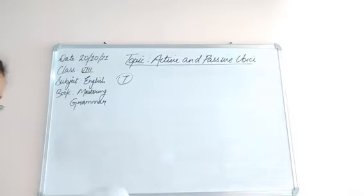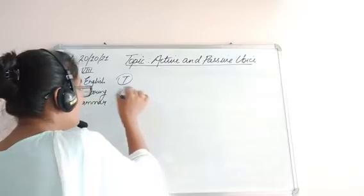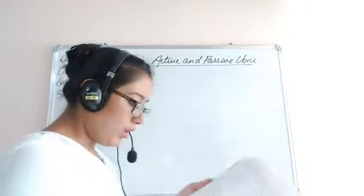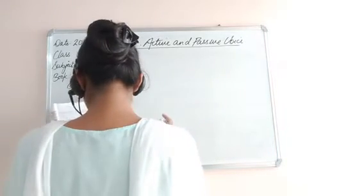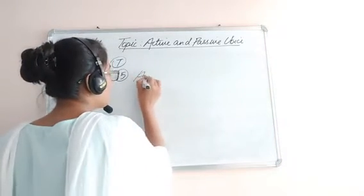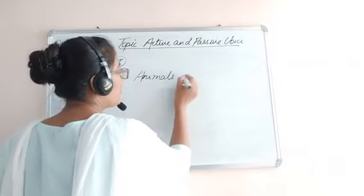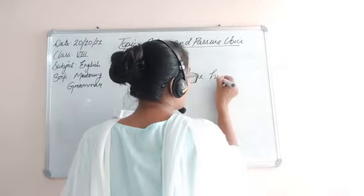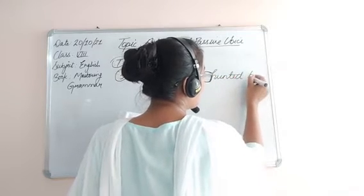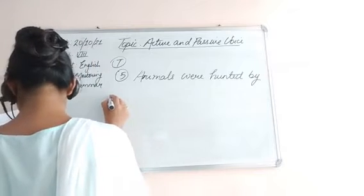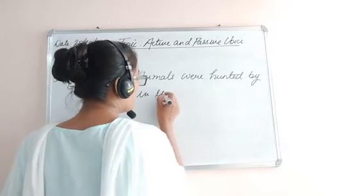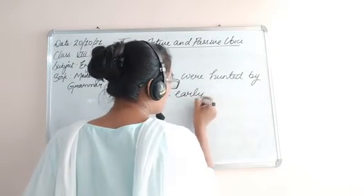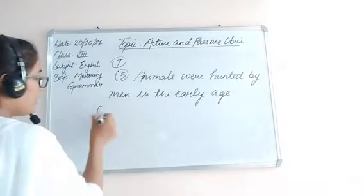The fifth sentence is: 'In the early age, men hunted animals.' The passive voice would become: 'Animals were hunted by men in the early age.'